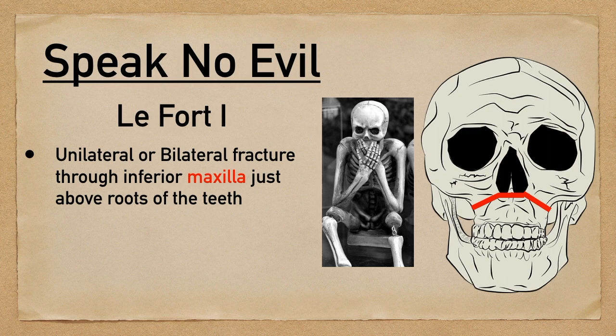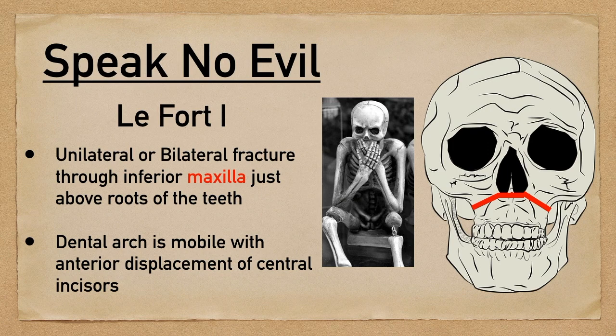The first fracture type is speak no evil. This is a LeFort type 1 fracture — a unilateral or bilateral fracture through the inferior maxilla just above the roots of the teeth. If you grab onto the central incisors and pull, there will be a mobile palate.